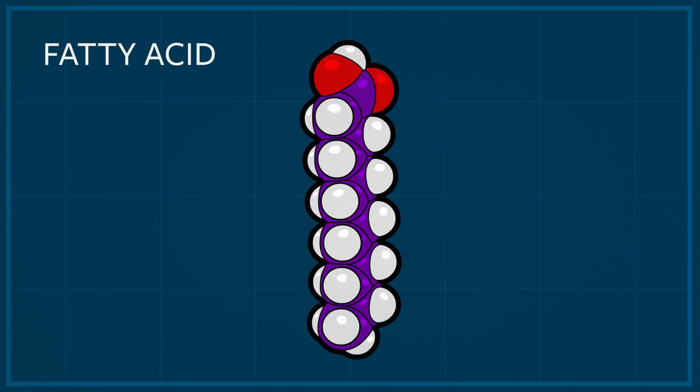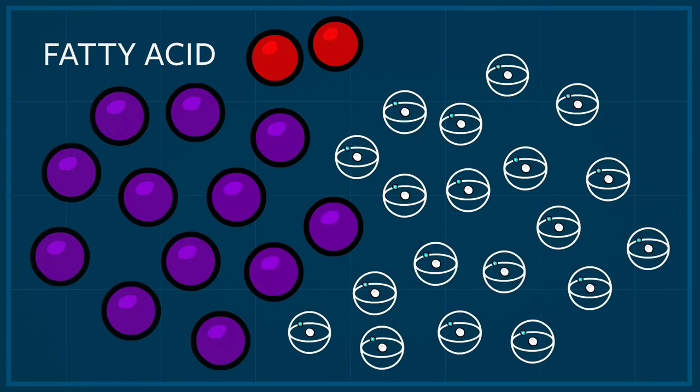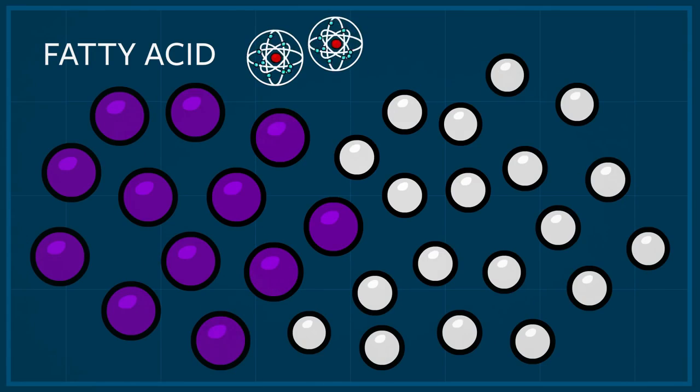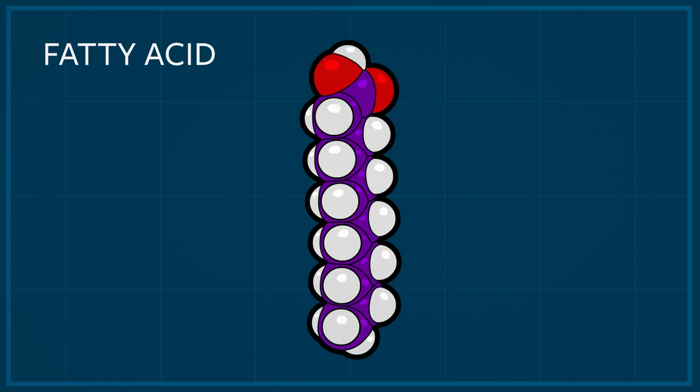This here is a special molecule called a fatty acid. It's a collection of carbon atoms, hydrogen atoms, and oxygen atoms, all stuck together in a specific pattern. Fatty acids are one of many complex molecules that living cells use inside their bodies. They build fatty acids with atoms they get from their environment.